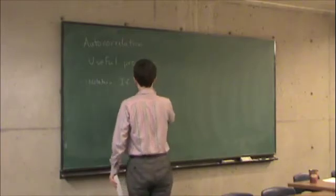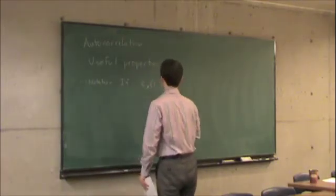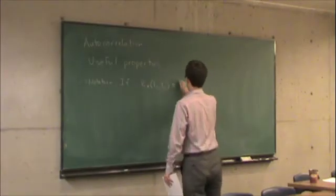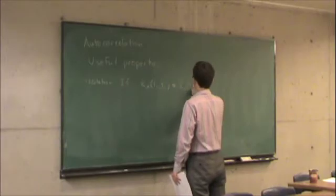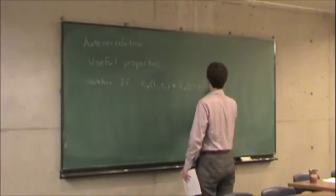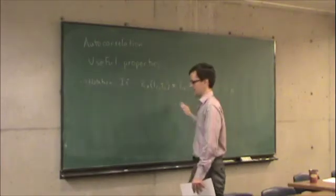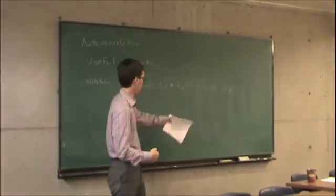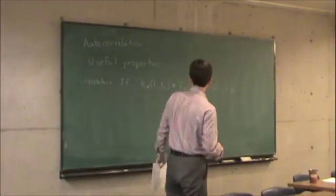If Rx of T1, T2 is equal to Rx of T1 plus alpha, T2 plus alpha for all alpha, so this is that constancy property. In this case, all that matters is the difference between T2 and T1.